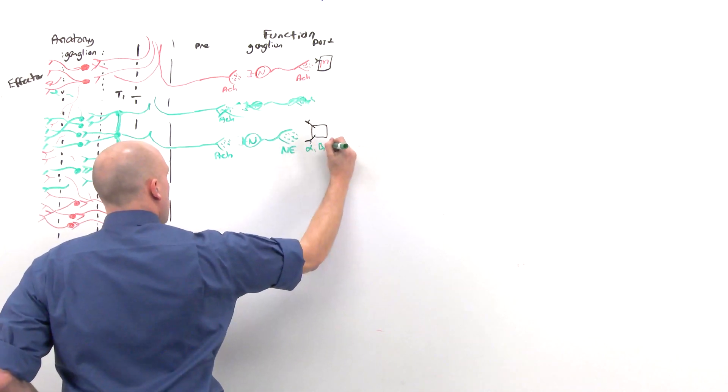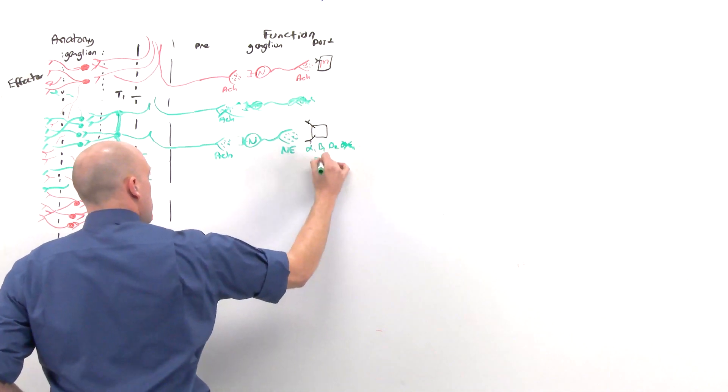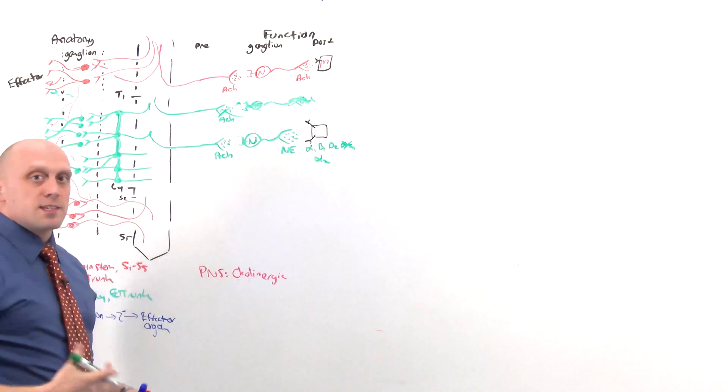That is alpha-1, beta-1, and beta-2. Alpha-2 is generally not innervated, so there has to be another way to stimulate that.